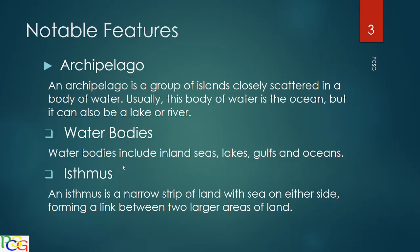The archipelago is a group of islands closely scattered in a body of water. Usually this body of water is the ocean, but it can also be a lake or river. Water bodies include islands, seas, lakes, gulfs and oceans.